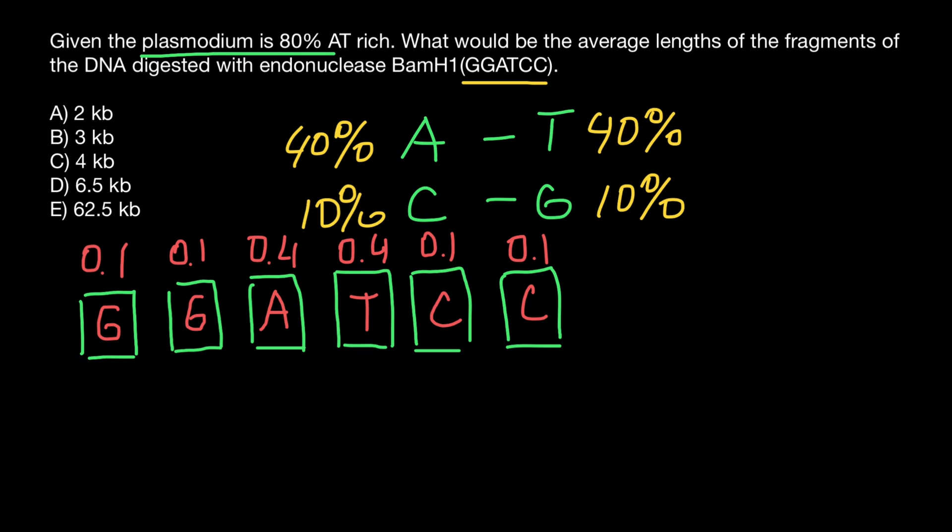Because we have independent probabilities, we have to multiply them. This is how we're going to find the probability to find such a sequence in a random spot if we just take six nucleotides. This probability equals 0.000016.